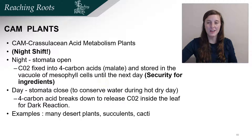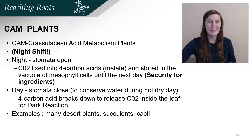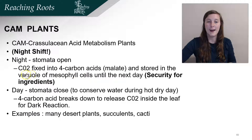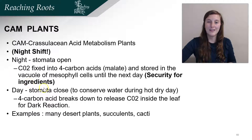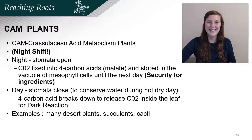CAM plants are extremely drought tolerant — they don't open their stomata at all during the day, meaning they can conserve water like crazy. They have a night shift when they open their stomata to gather carbon dioxide. The carbon dioxide is fixed into the 4-carbon acid malate and stored in the vacuole of the mesophyll cells until the next day. Note that the Calvin cycle happens within the mesophyll cells in CAM plants, not the bundle sheath cells like C4 plants. During the day, the stomata are closed to conserve water, and the 4-carbon acid breaks down to release carbon dioxide inside the leaf for the Calvin cycle to occur. Many desert plants, succulents, and cacti are CAM plants.